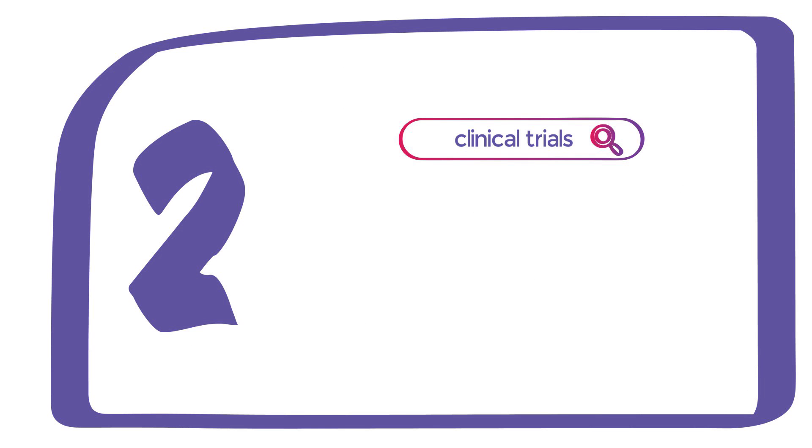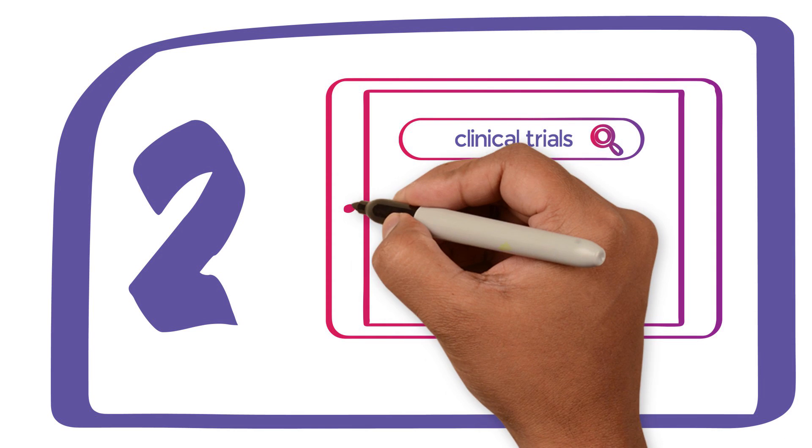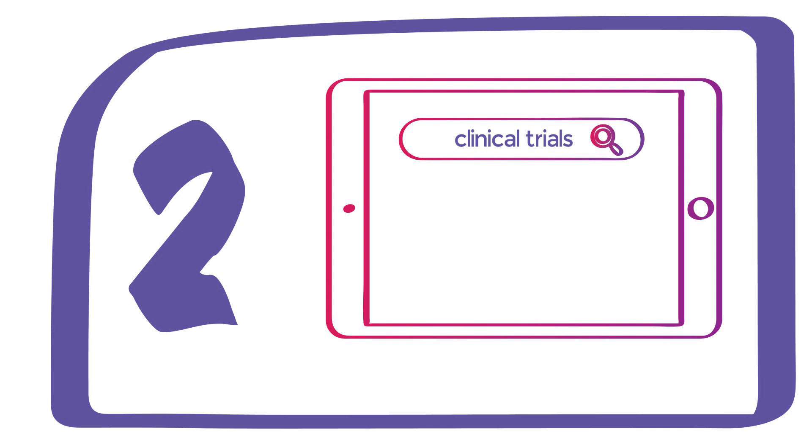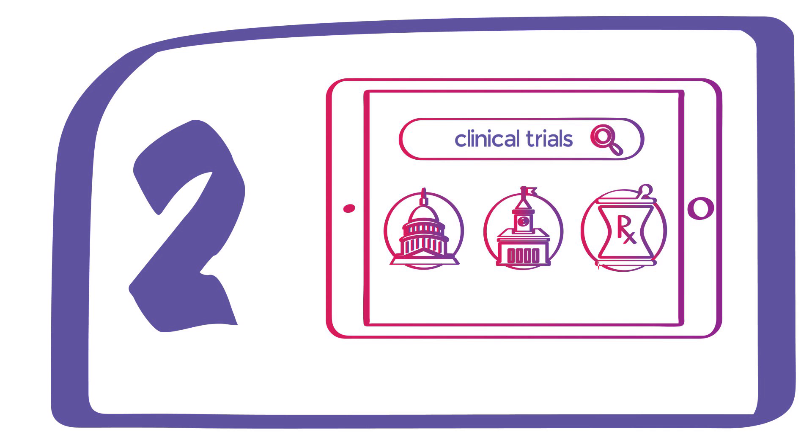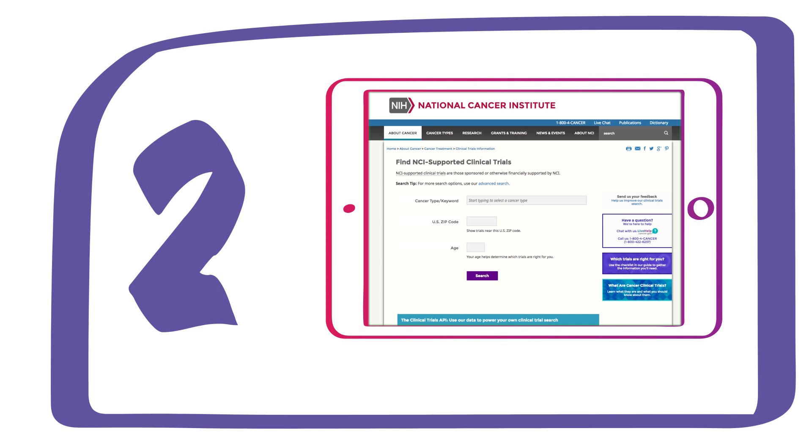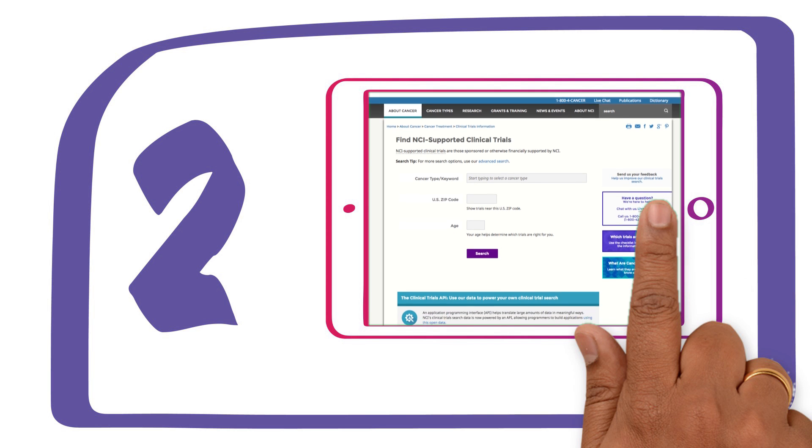Next, search for clinical trials. It's important to note that many different groups sponsor cancer-related trials, including the government, universities, and drug companies. One website, trials.cancer.gov, lets you search for cancer clinical trials supported by NCI. The guide lists other websites and sources you may want to search as well.